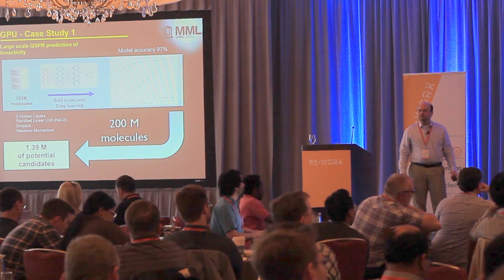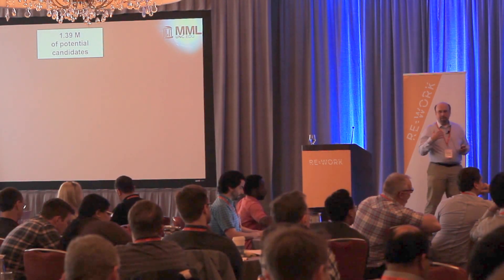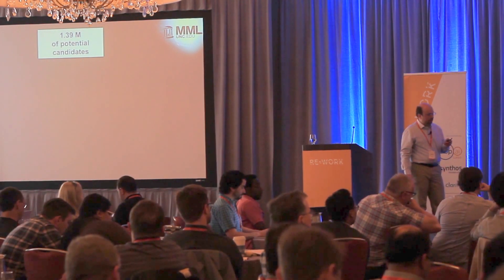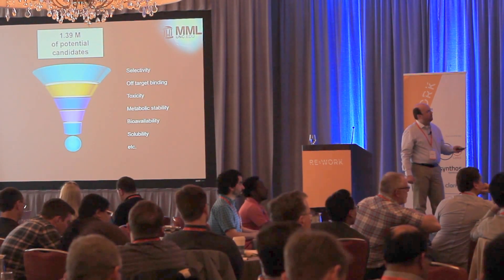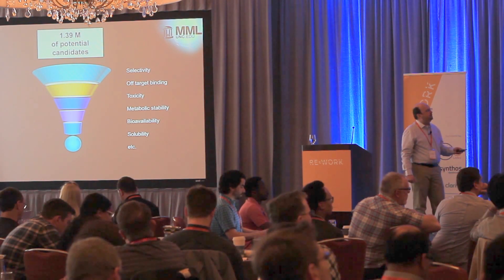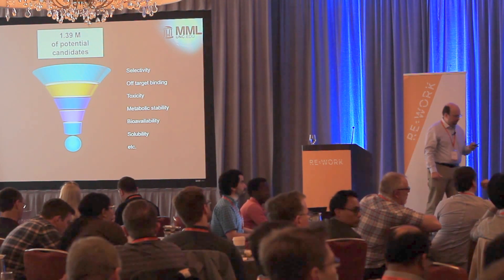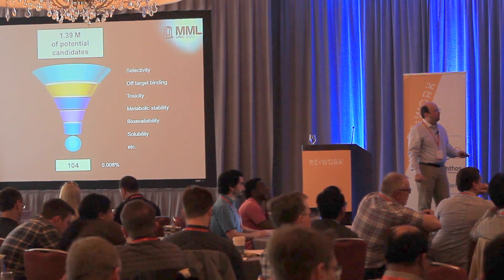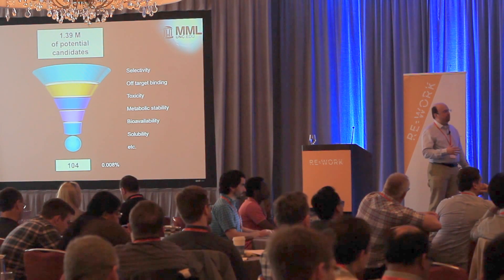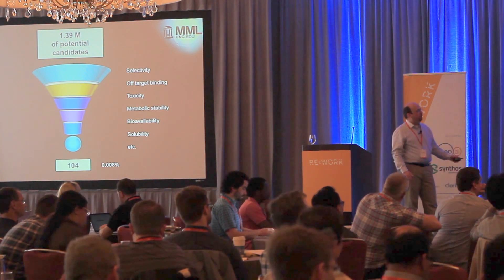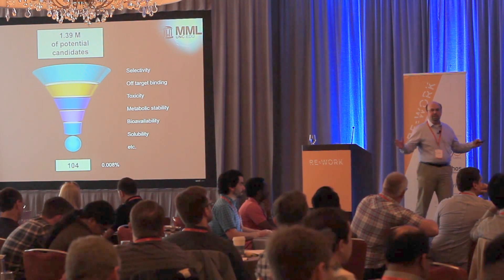Would those 1.4 million molecules automatically be drugs? Of course not. When we apply additional constraints — including target binding sensitivity, toxicity, and other requirements — we end up with 100 candidate molecules. Multi-task models are really useful for essentially finding the needle in the haystack of this huge chemical space.